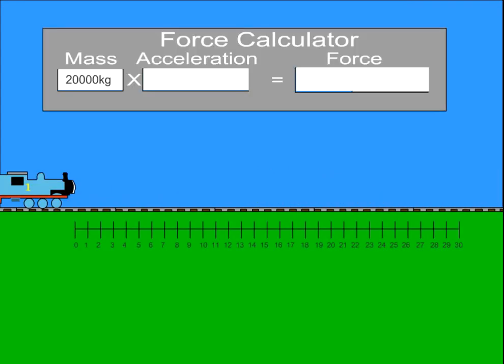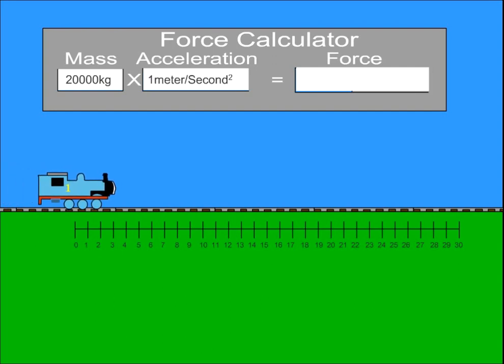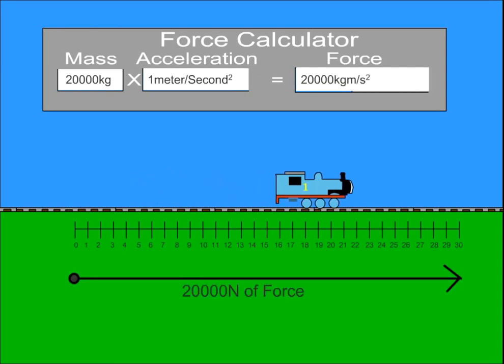If Thomas's mass is 20,000 kilograms and his acceleration is 1 meter per second squared, thus the resulting force is 20,000 kilogram meters per second squared, or 20,000 newtons.